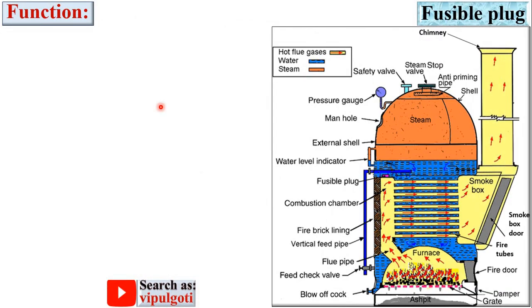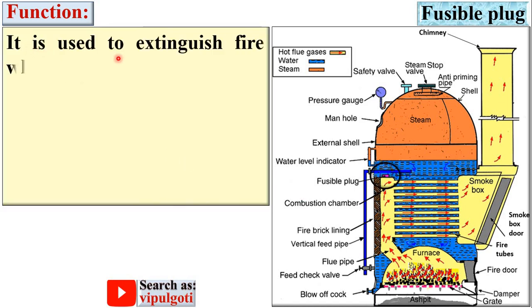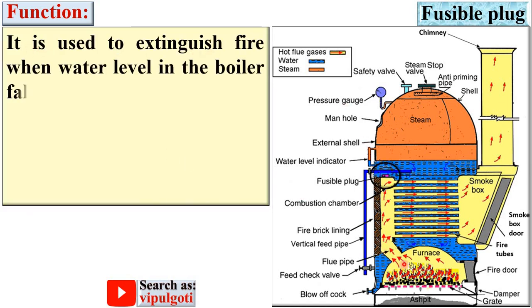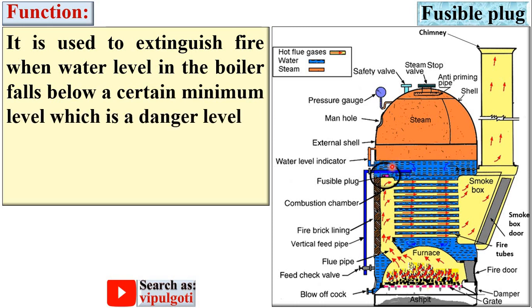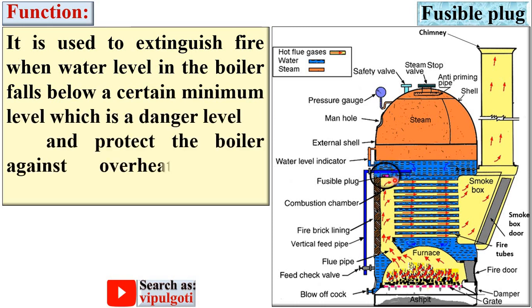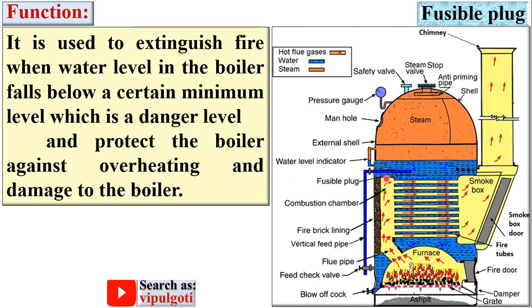Let's start with the function of fusible plug. Here you can see the fusible plug. It is used to extinguish fire when the water level in the boiler falls below a certain minimum level, which is a danger level, and to protect the boiler against overheating and damage.